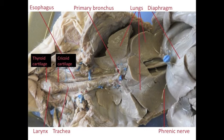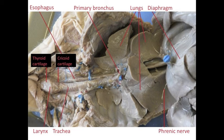The largest structure of the larynx is the thyroid cartilage; it looks a little bit like a shield. Just inferior to the thyroid cartilage is a ring of cartilage called the cricoid cartilage. Another structure you should be familiar with is the thyroid gland. It has been removed here, but it might look like some tissue that's been pushed off to the side of the larynx.